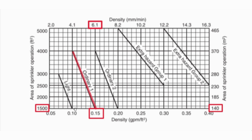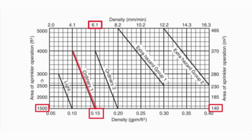We use these curves to find the appropriate density for other hazard classifications. For light hazard, the density is 0.1 gpm per square foot at 1500 square feet area of sprinkler operation. For ordinary hazard group 2, it is 0.2 gpm per square foot at 1500 square feet. For extra hazard group 1, the density is 0.3 gpm per square foot, and for extra hazard group 2 it is 0.4 gpm per square foot.